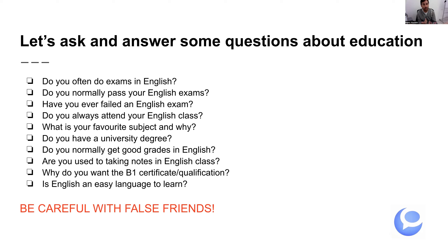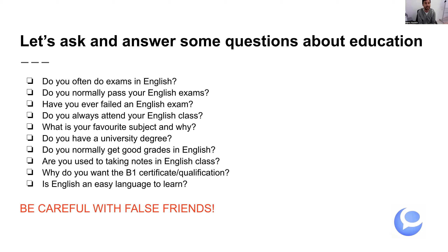As I said before, you need to be very careful with false friends. It's 'do exams,' not 'make exams.' 'Pass an exam,' not 'approve an exam.' 'Fail an exam,' not 'suspend an exam' — 'suspend' means to postpone. We say 'attend class,' not 'assist class.' 'Subject' is the academic subject, not 'signature' — 'signature' is a written signature. 'Degree,' not 'career.' 'Grades,' not 'notes' — 'notes' means apuntes, not 'points.' 'Certificate' or 'qualification,' not 'title.' And 'language,' not 'idiom' — 'language' is a language, 'idiom' is an expression. Be very careful with false friends.